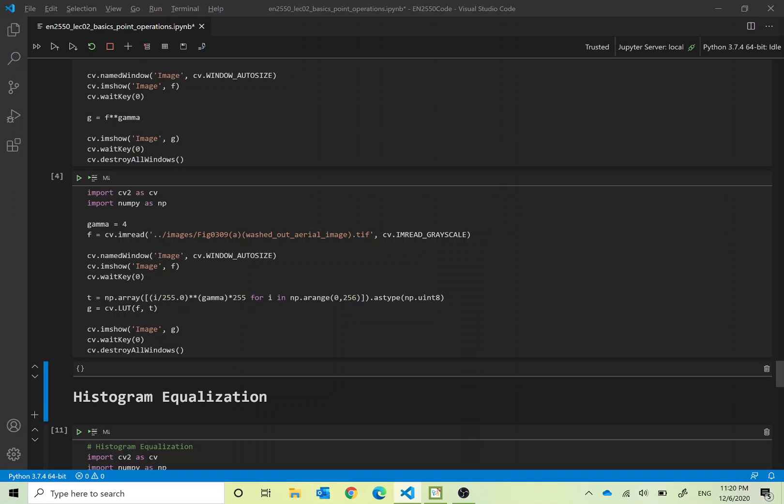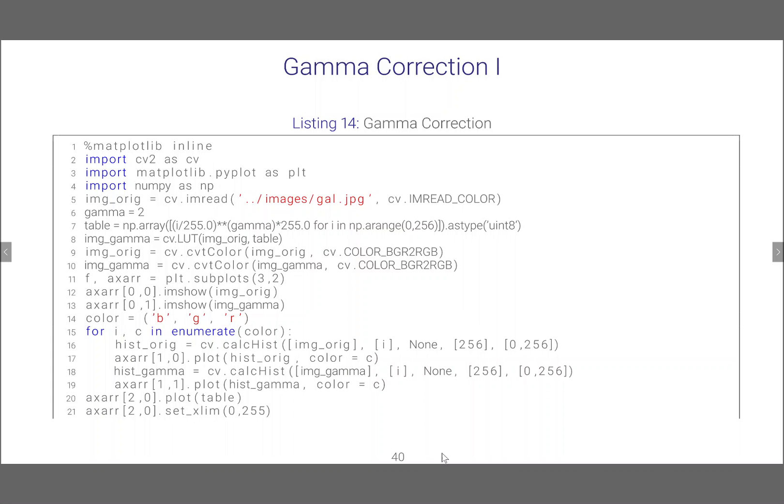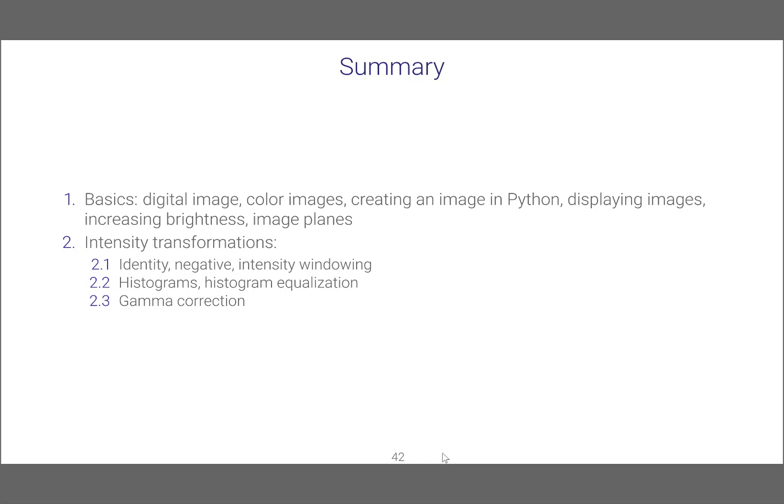Same effect. In summary, gamma correction helps us to get rid of extremely bright or extremely dark regions and brighten them up in a more vibrant range of intensities based on the choice of the gamma value. Thank you.